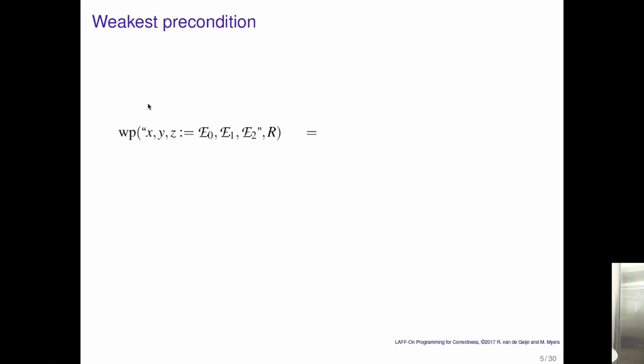So how do we define the weakest precondition for this command? Well, the expressions obviously have to be valid. And then you simultaneously substitute expressions e0, e1, and e2 for the corresponding free occurrences of variables x, y, and z.